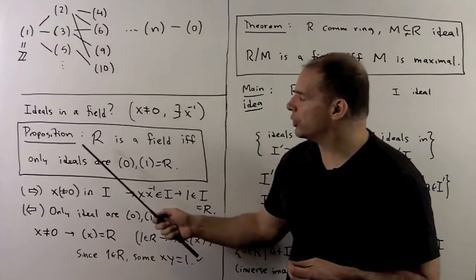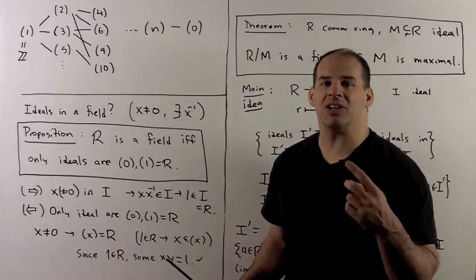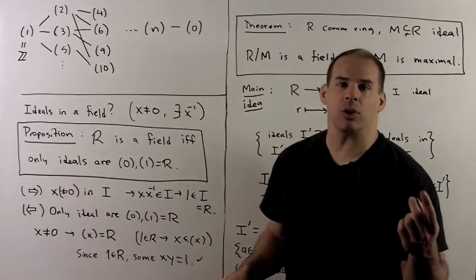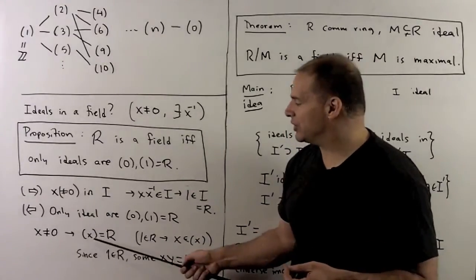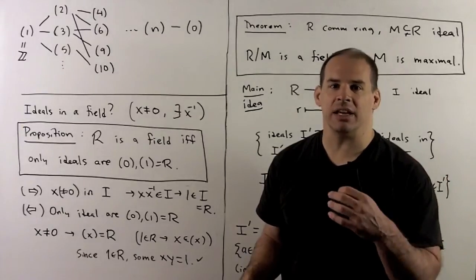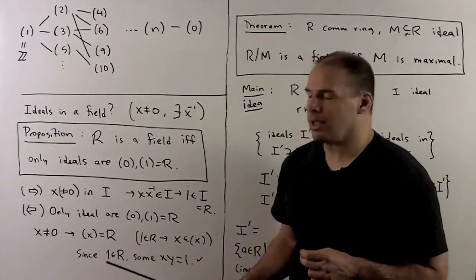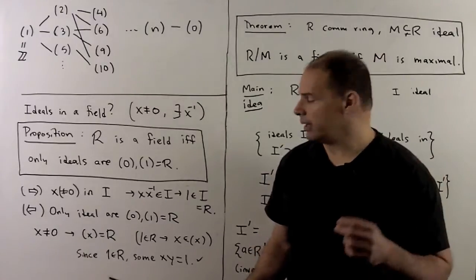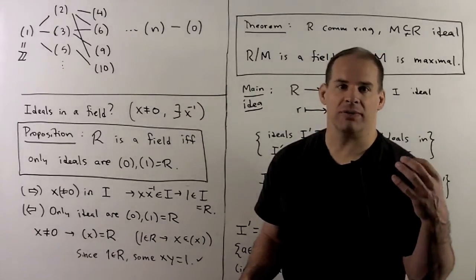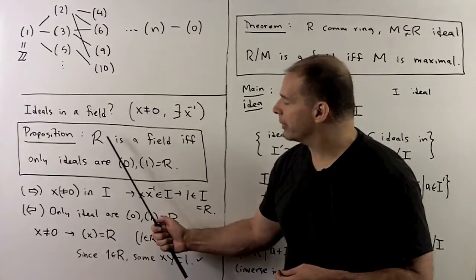For the other direction, we assume the only ideals are the zero ideal and the ring itself, and we want to show R is a field — specifically that any non-zero X must be a unit. If we form the ideal generated by X, it's either the zero ideal or the ring itself. It can't be the zero ideal: since the ring has a multiplicative identity, 1·X = X is in the ideal, and X is non-zero. So this ideal is the ring itself. The ring has a 1 in it, so some multiple of X equals 1 — some X·Y = 1 — meaning Y is the inverse of X. So X is a unit, meaning we're in a field.